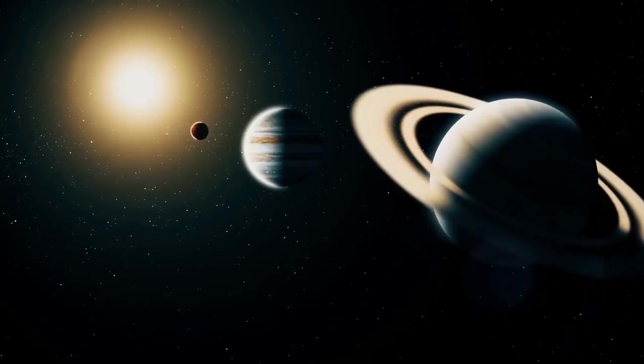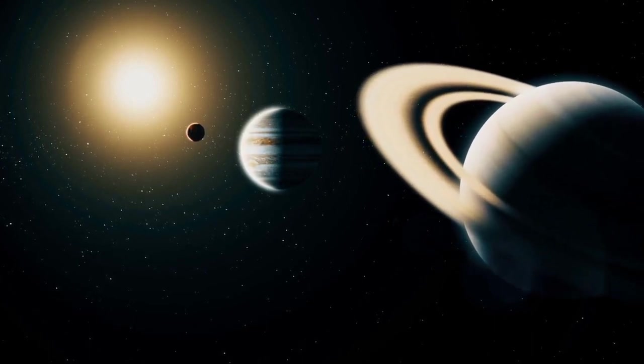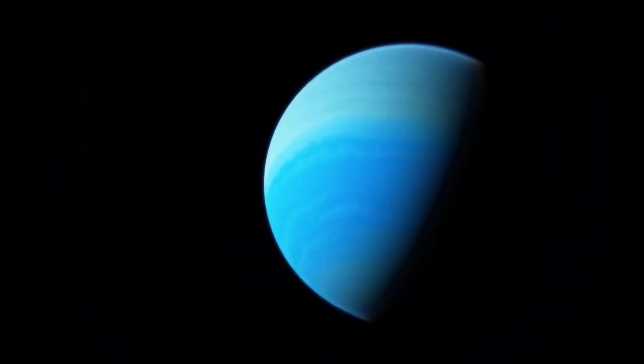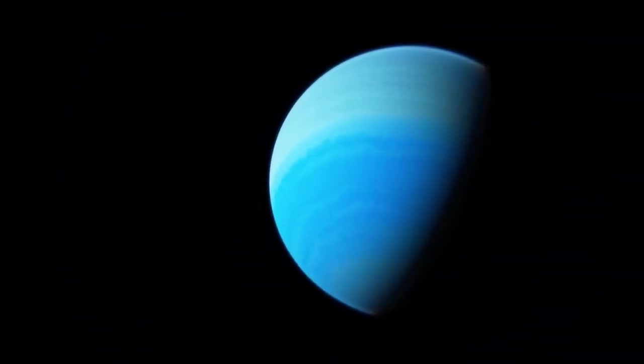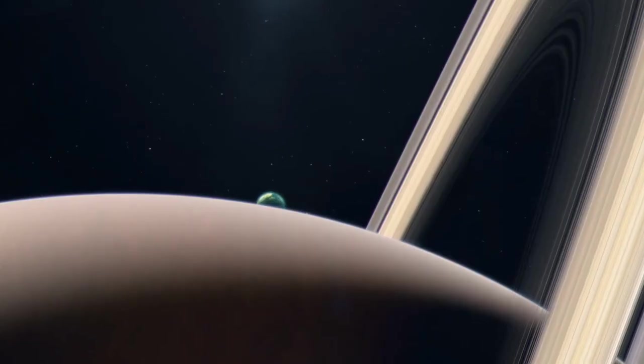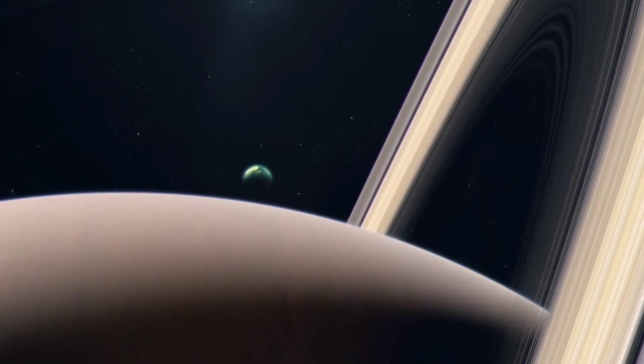The four Jovian planets, Jupiter, Saturn, Uranus, and Neptune, are gas and ice giants. They are predominantly made of helium and hydrogen. The ice giants also contain rock, ice, and a liquid mixture of water, methane, and ammonia. All four Jovian planets have multiple moons and ring systems, and are immense.